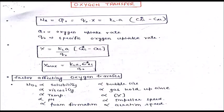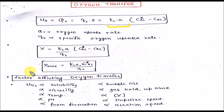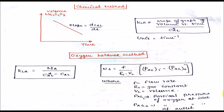These are some formulas for oxygen transfer. Similar to mass transfer, the rate of oxygen transfer equals kLa — the volumetric oxygen transfer coefficient — multiplied by (CL* minus CL). You can also calculate Xmax similarly. The kLa can be determined by three methods: the chemical method, oxygen balance method, and dynamic method.